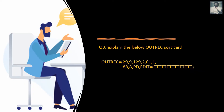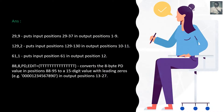The third question: explain the below OUTREC SORT card. In the OUTREC we do a lot of reformatting, especially for numeric fields. The OUTREC has: 29,9 then 20, then 129,2, then 61,1, then 88,8 PD — packed decimal — edit into some format. So 29,9 puts input position starting from 29 with length 7, so positions 29 to 37, into output positions 1 to 9.